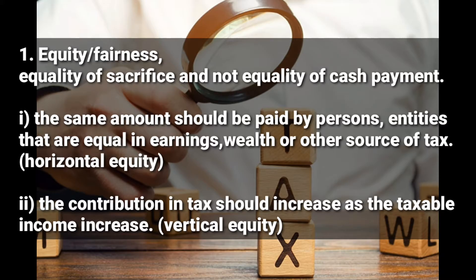Secondly, the contribution in tax should increase as the taxable item increases. If my income goes on increasing — if I was earning 400,000 last month and my salary increases to 600,000 — my contribution to tax is supposed to increase because my taxable item is also increasing. This is called vertical equity.